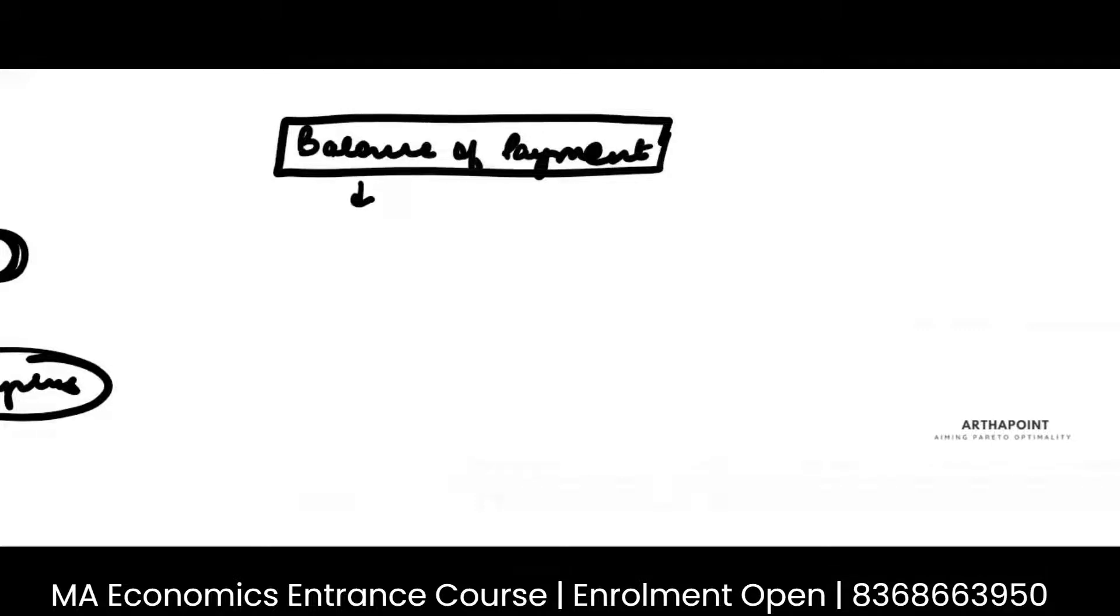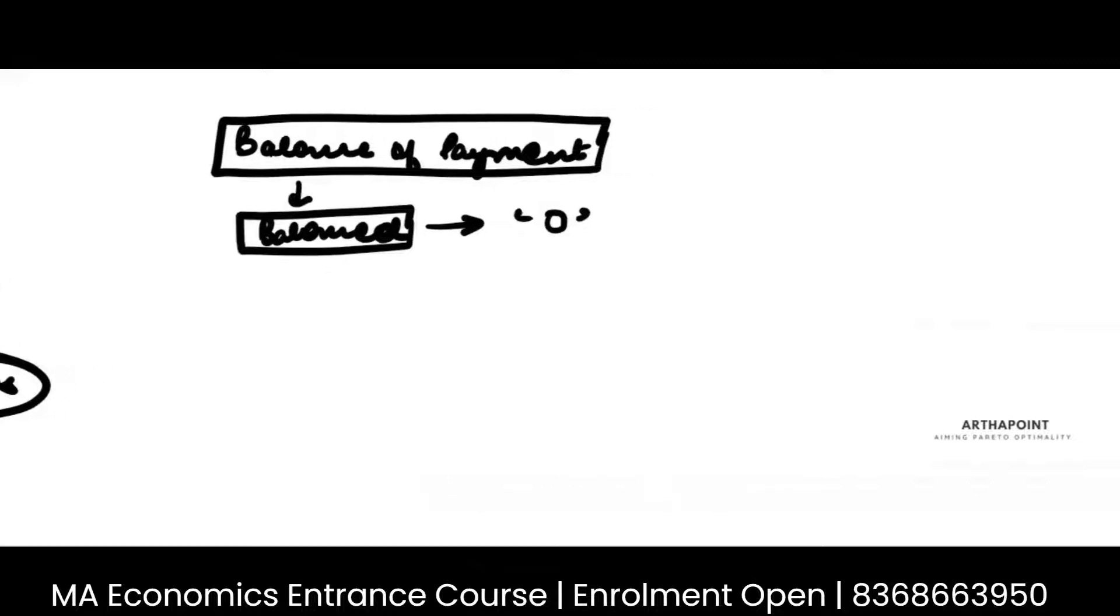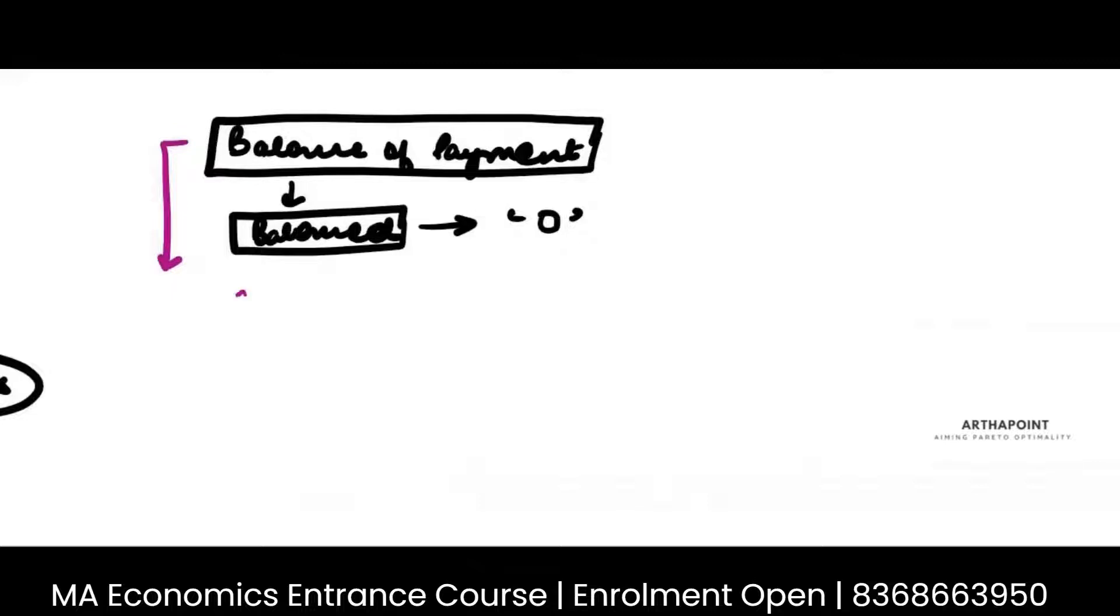If we go ahead and understand the balance of payment, by its very definition, is an account which has to be balanced. When we say it has to be balanced, this means that it has to come up to zero. There are two parts to balance of payment that we just studied. The first is basically your current account. And the second is a capital account.